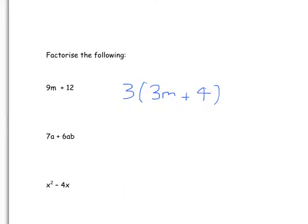On the second question: is there any common number that both 6 and 7 go into? Well, no, there isn't. But is there any common letter in both parts of 7a and 6ab? Yes, there is — a. So we can take out an a. What do we times a by to get to 7a? Well, that's just 7. And what do we times a by to get to 6ab? We times it by 6b.